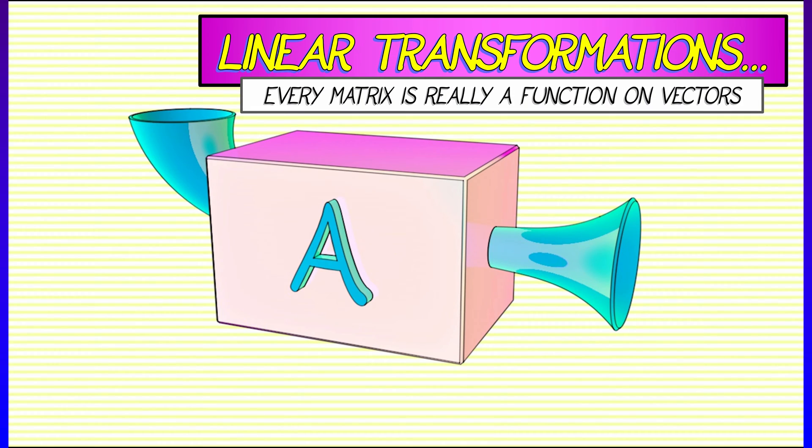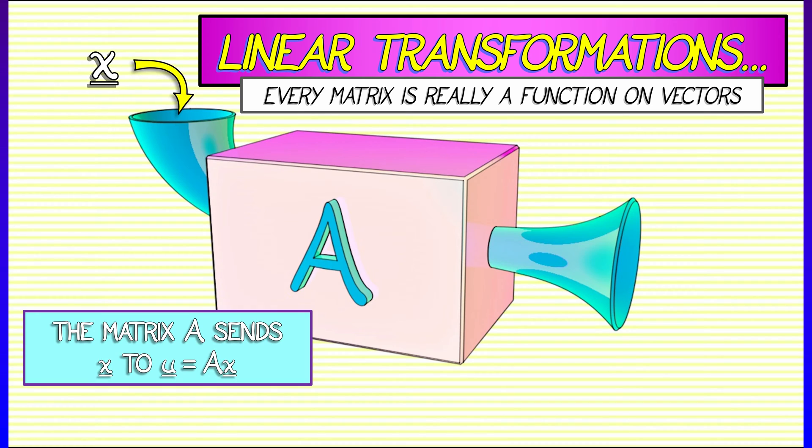What does that mean? I'm going to think of A as taking an input vector x and returning an output vector u by means of our old friend Ax = b. In this case, u = Ax.